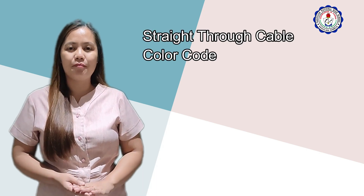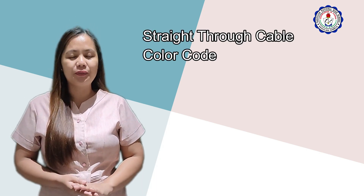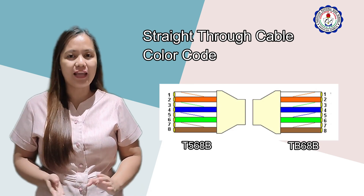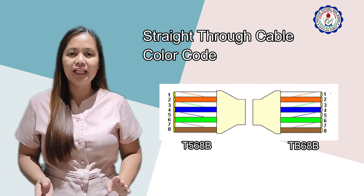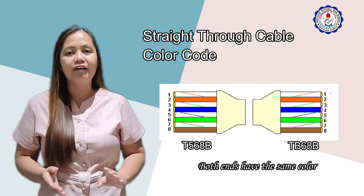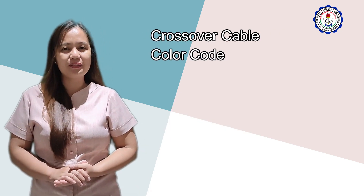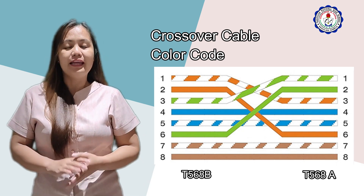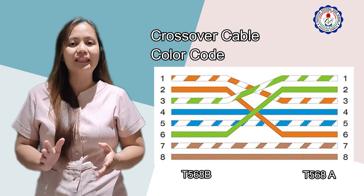These are the standard color codes that we can use in making Ethernet cable. If you are going to make a straight-through cable, you are going to use either T568A or T568B color code on both ends of your cable — meaning both ends have the same color code. For crossover, you use T568A on one end and T568B on the other end.